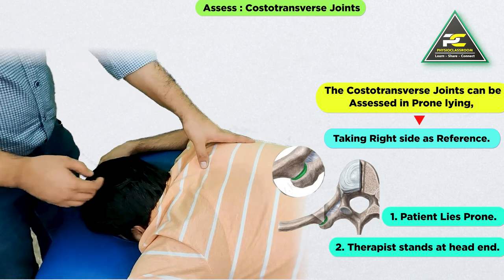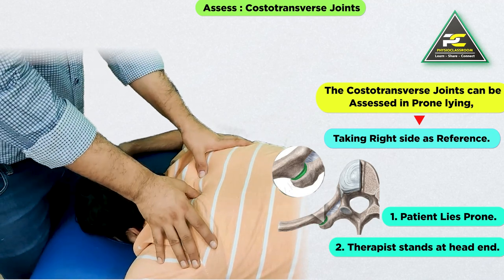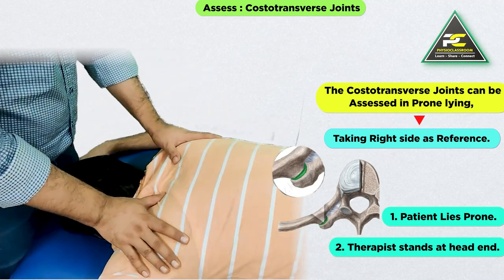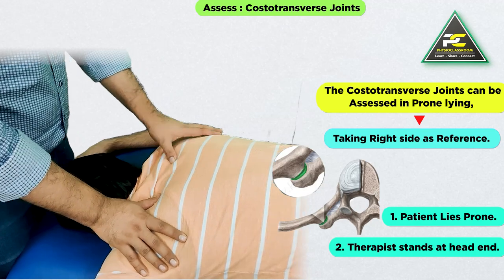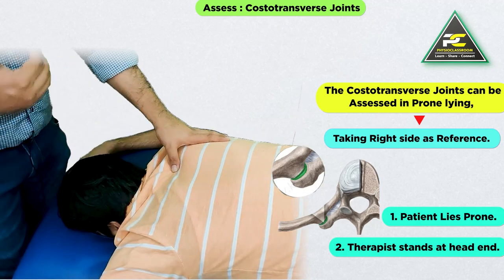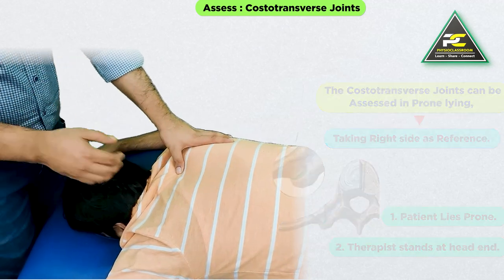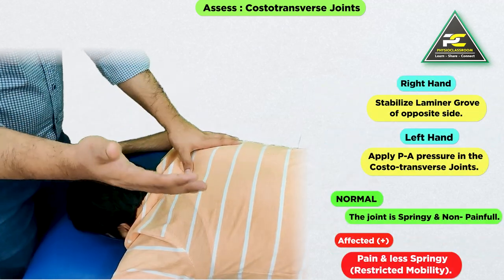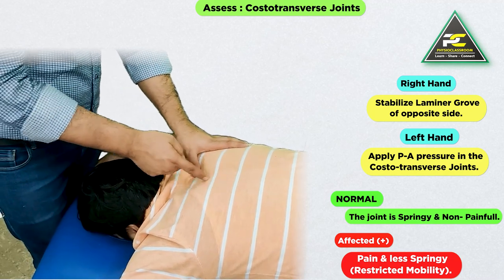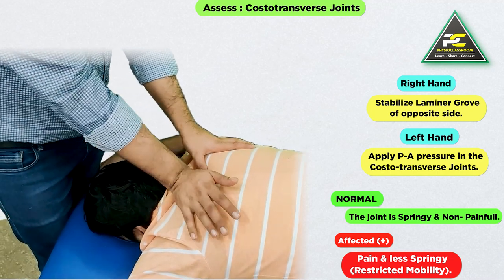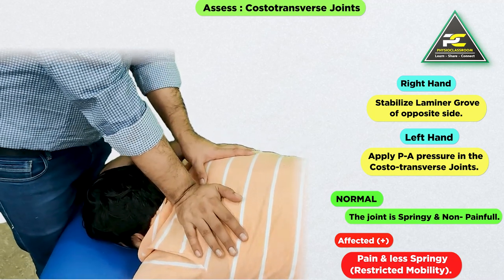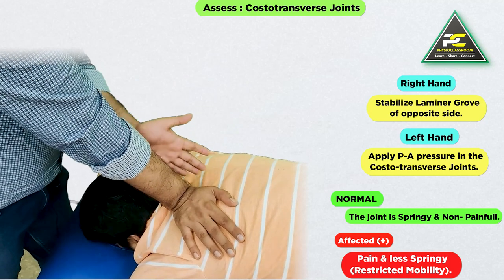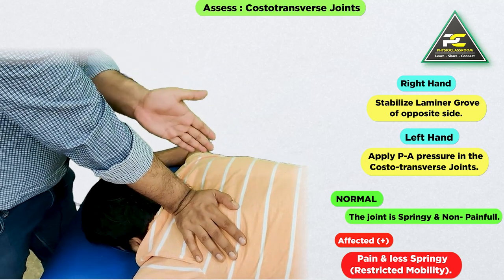The therapist is going to make the patient lie down in the prone position and is going to stand at the head end. Now, with the right hand, the therapist is going to stabilize the laminar groove of one side and then is going to apply a posterior-anterior pressure to the costo-transverse joint.